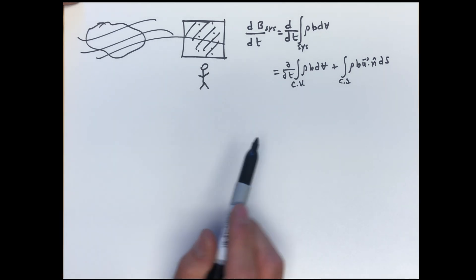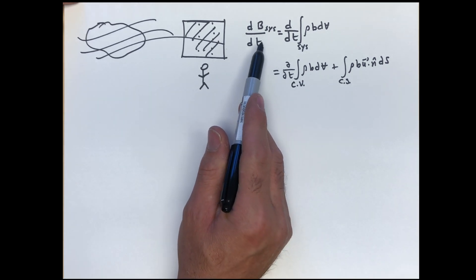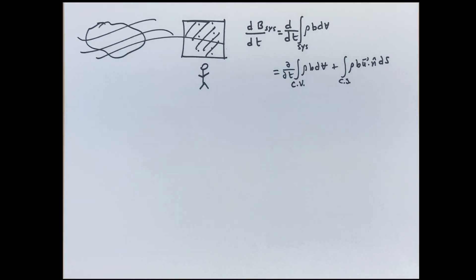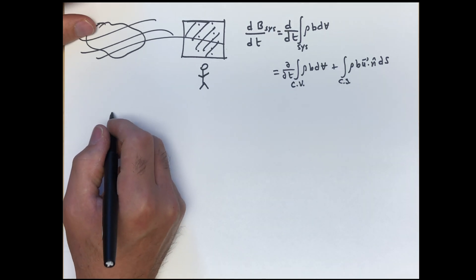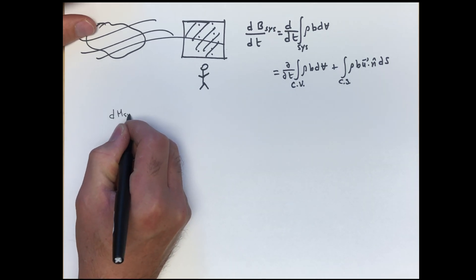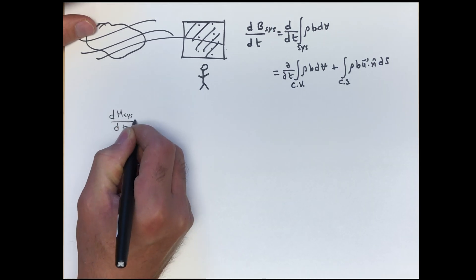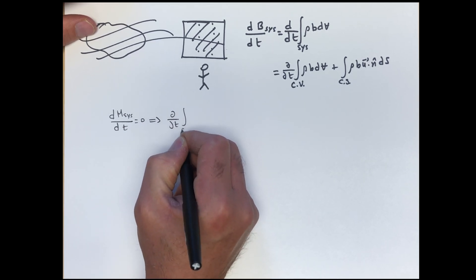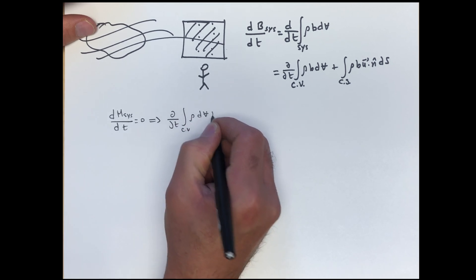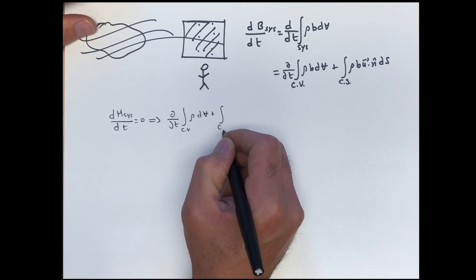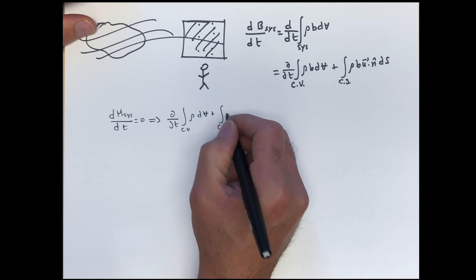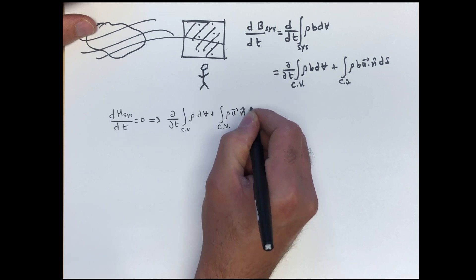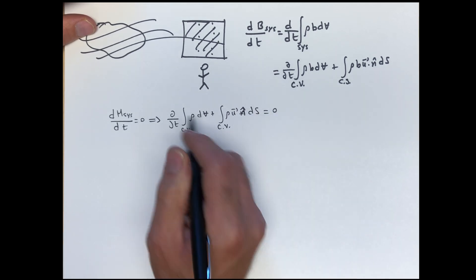Today we are going to take the application of the Reynolds transport theorem to mass conservation, which said that dm/dt for mass, dm for a system by dt equals zero, so that implied that d/dt of the integral over a control volume for ρ dV plus mass out minus mass in, ∫ρu·n dS is equal to zero.